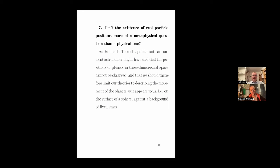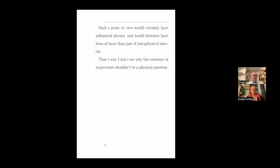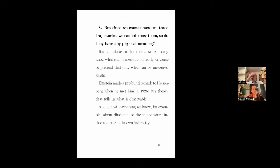Isn't the existence of real particle positions more of a metaphysical question than a physical one? As my friend Roderick Tumulka, also a defender of the de Broglie-Bohm theory, points out: an ancient astronomer might have said that the position of a planet in three-dimensional space cannot be observed — we only see planets on the surface of a sphere against a background of fixed stars — and therefore we should limit our theories to describing their apparent movement. Such a point of view would certainly have influenced physics. The existence of trajectories is a physical question about what we can say about the world outside of laboratories.